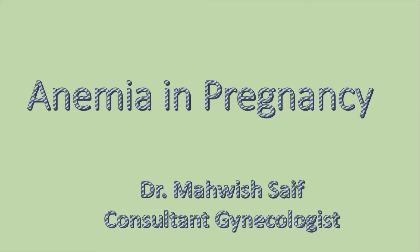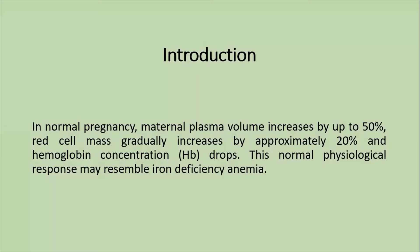In this video we will discuss anemia in pregnancy. In normal pregnancy, plasma volume increases 50% and red cell mass increases 20%.